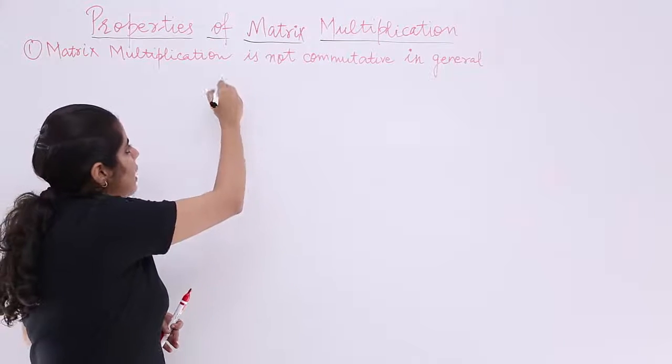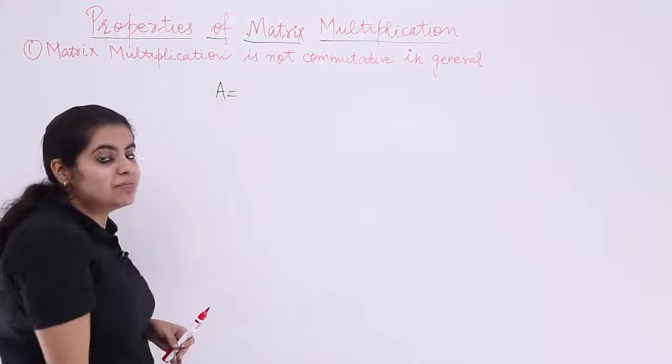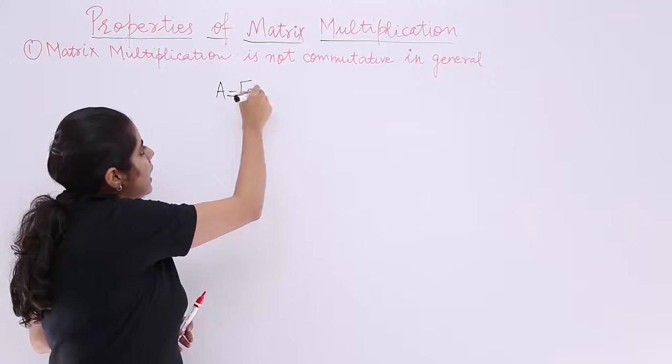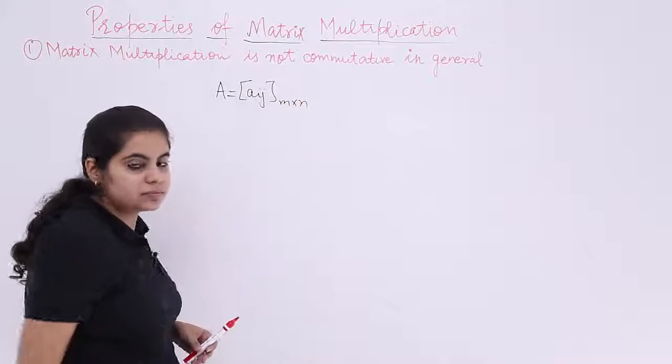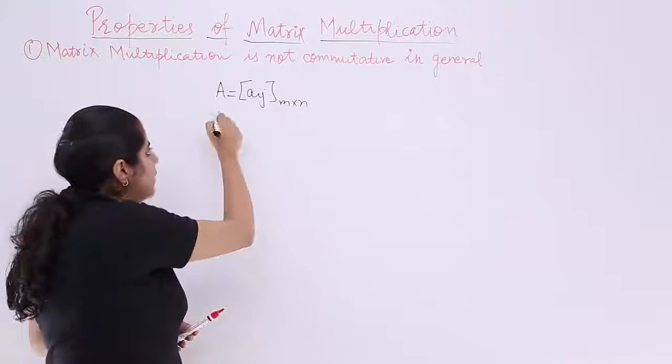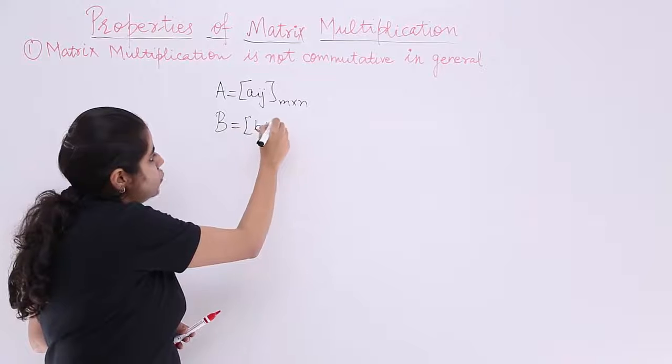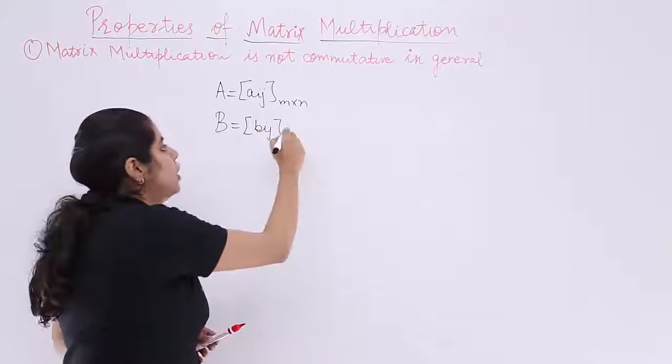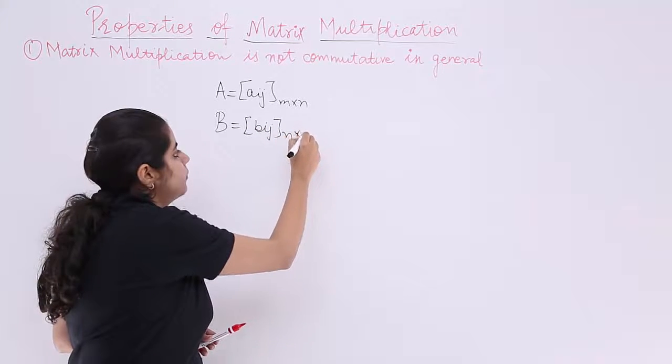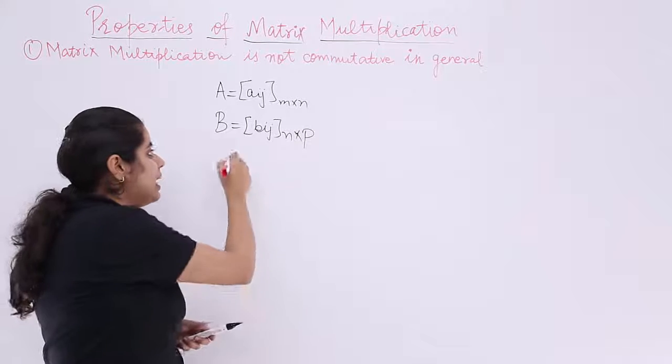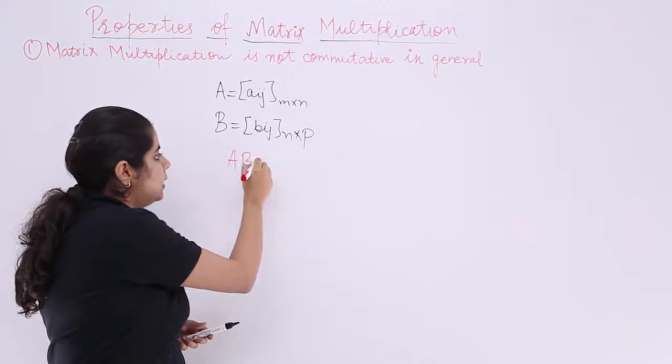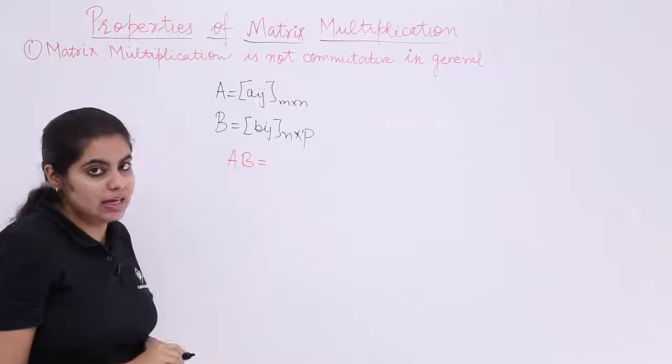Suppose I have a matrix A and that matrix A is A_ij and it is the order M by N. And then I have another matrix B which is B_ij and it has the order N by P. So that means what? That means whether AB is possible, that means multiplication is possible.